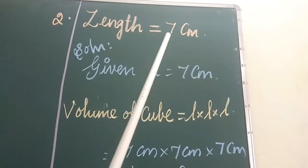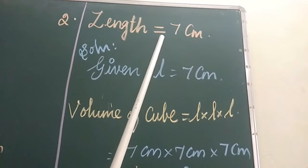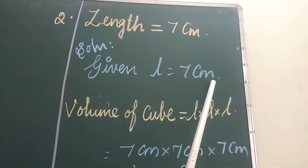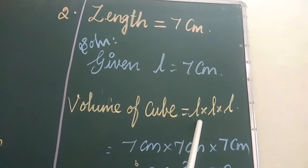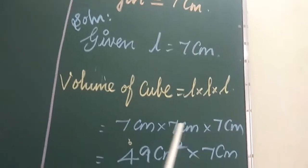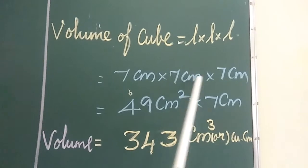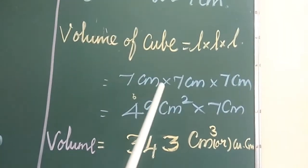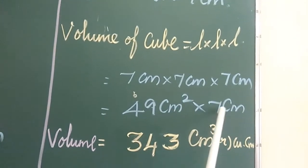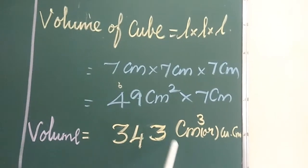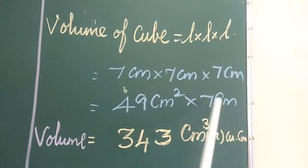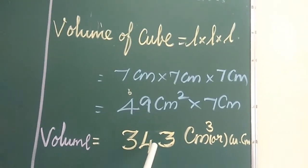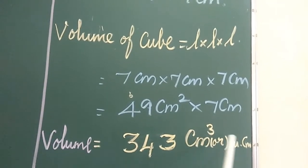Next — length equals 7 cm. This is a cube. Solution — given: L = 7 cm. Volume of a cube = L × L × L. So, volume = 7 cm × 7 cm × 7 cm. Let's multiply: 7 × 7 = 49 cm². Then 49 × 7: 9 × 7 = 63, carry 6; 4 × 7 = 28, plus 6 = 34. So finally, the volume is 343 cm³ or cubic cm.